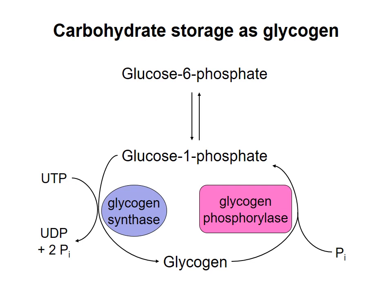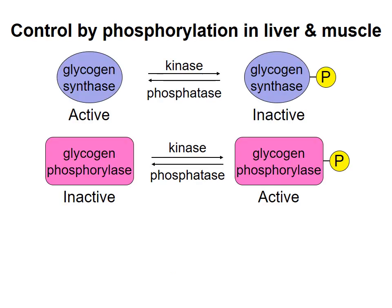With that background, let's see how glycogen synthase and glycogen phosphorylase are regulated in skeletal muscle and liver. In both tissues, the main form of regulation is phosphorylation. When phosphorylated, glycogen synthase becomes less active. In contrast, the phosphorylated form of glycogen phosphorylase is more active than the dephosphorylated form. This is true in both skeletal muscle and in liver.